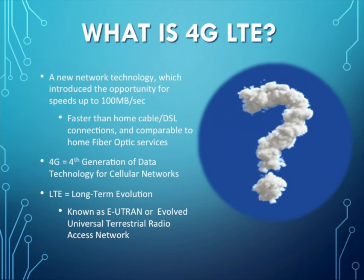You might be asking yourself, what is that LTE that appears on your phone or mobile device? Well, 4G LTE is a new network technology which introduced the opportunity for speeds up to 100 megabytes per second. This means that it is faster than your home cable or DSL connection, and comparable to fiber optic services like AT&T U-verse. The 4G and 4G LTE stands for fourth generation of data technology for cellular networks. LTE stands for long term evolution, also known as E-UTRAN or Evolved Universal Terrestrial Radio Access Network.